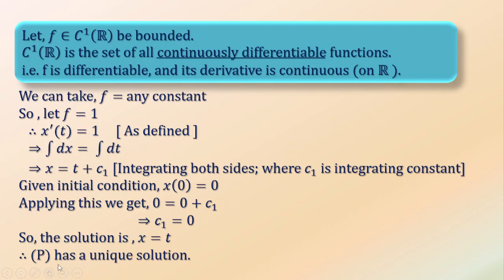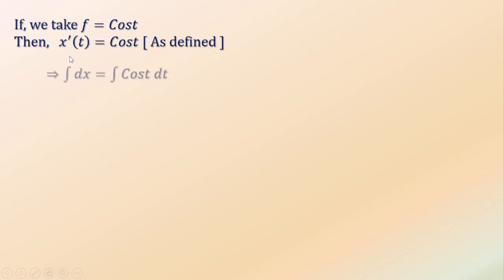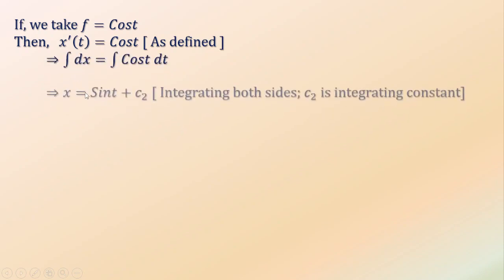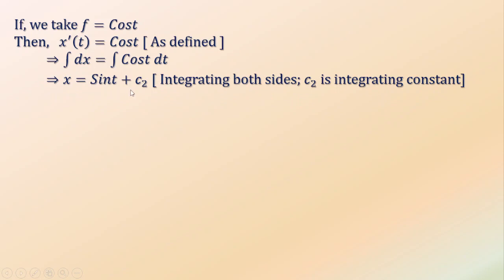So we can say it has a unique solution for this example. Now let us take another function as cos(t) which is also continuously differentiable and bounded. Then x'(t) equals cos(t), and integrating both sides we get x equals sin(t) plus c₂ where c₂ is integrating constant.